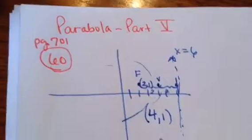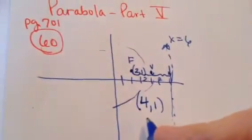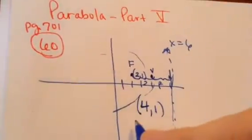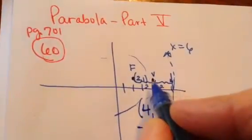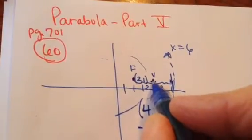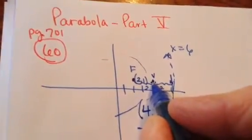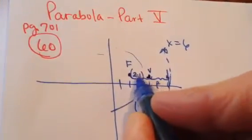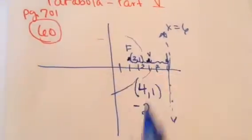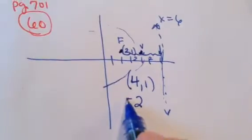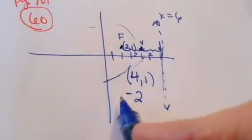So the first blank: what is your vertex? It would be (4, 1). And the p-value is negative 2, because you had to go from the vertex left 2 to get to your focus. That's why it's negative 2 for your p-value.